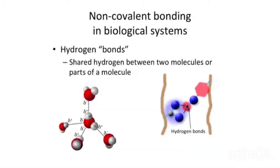Non-covalent bonding is very important in biological macromolecules. Like water, it is possible to form hydrogen bonds between other types of molecules where a hydrogen, which is partially positive, interacts with another molecule that is partially negative, so that the hydrogen becomes shared between two different molecules or parts of a single molecule. Hydrogen bonding is one of the key non-covalent types of bonds in biochemistry.